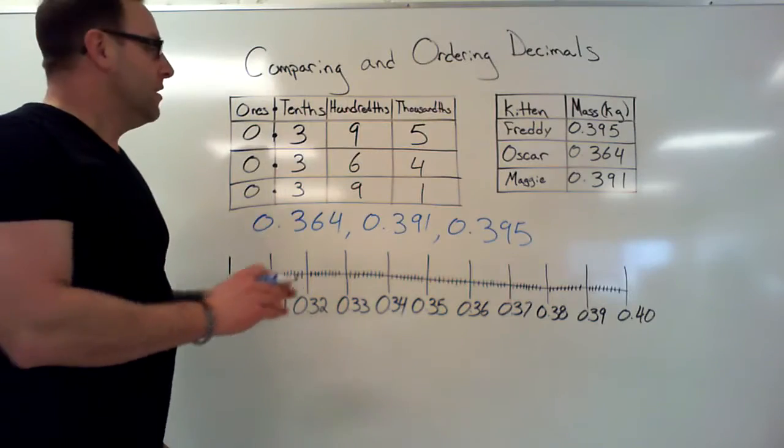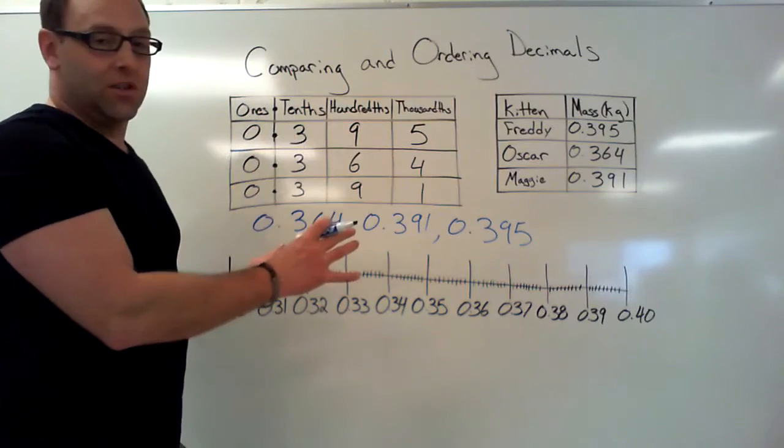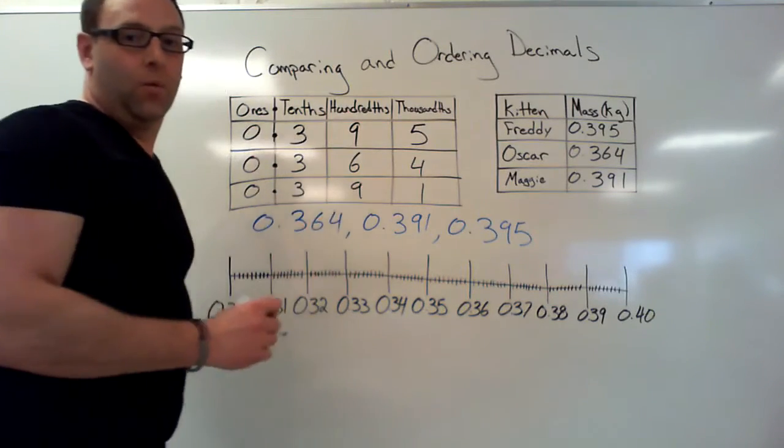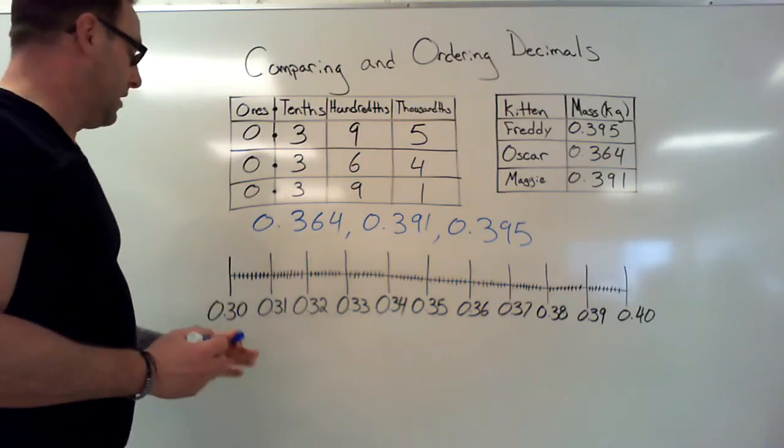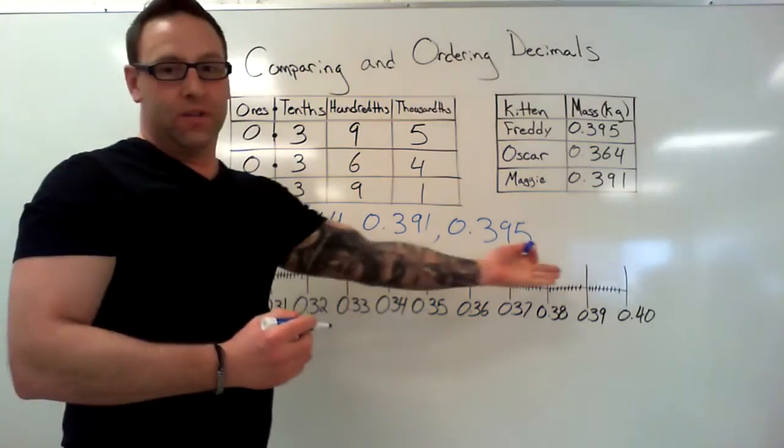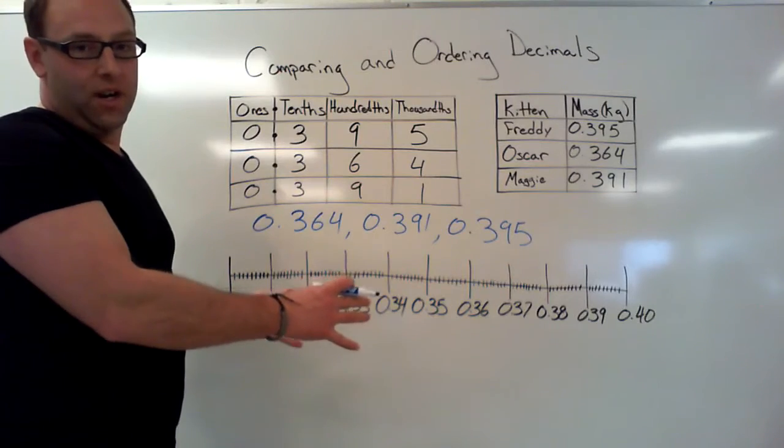Okay, let's look at the number line now. When we're comparing things on a number line, we have to understand what all these little lines mean. I know my line's not very straight.